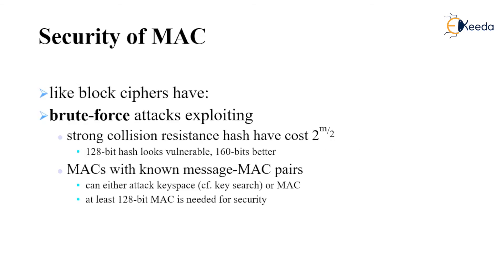Security of MAC, like block ciphers, faces brute force attacks. Strong collision resistance for hash has a cost of 2 to the power of m/2. Just as with symmetric and public key encryption, attacks fall into two categories. The brute force attack on MAC is more difficult than on hash, because the strength of the hash function against brute force depends solely on the length of the hash code, and this costs around 2 to the power of m/2 for the hash functions.